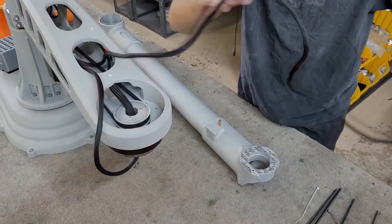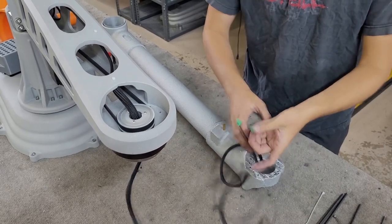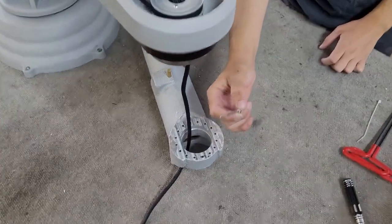Take the extruder cable out and feed it through the distal arm. The next step is to attach the distal arm.